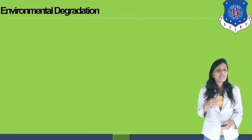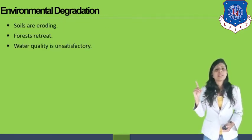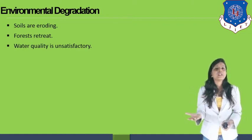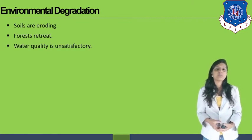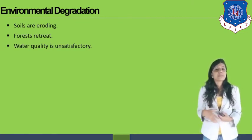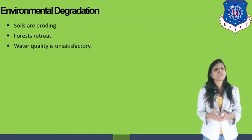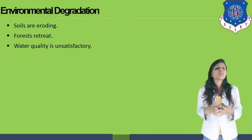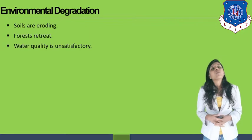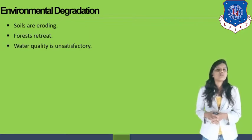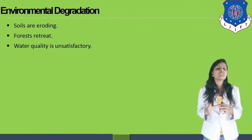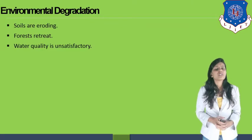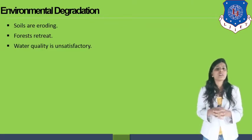How is the environment degrading? First, soils are eroding — the nutrients in the soil are depleting. If there are no nutrients, there will be no agriculture, and if there is no agriculture, there will be no food production. Second, forests are retreating — we are visiting forests and polluting them more and more by littering. Third, water quality is unsatisfactory. Washing clothes and animals in lakes is adding pollution and disturbing the quality of water.